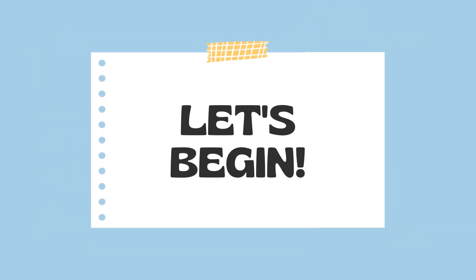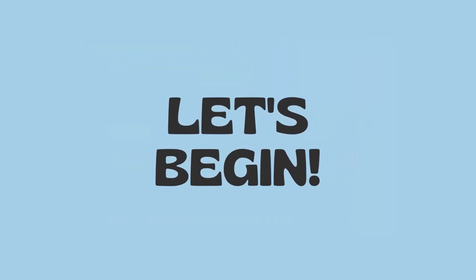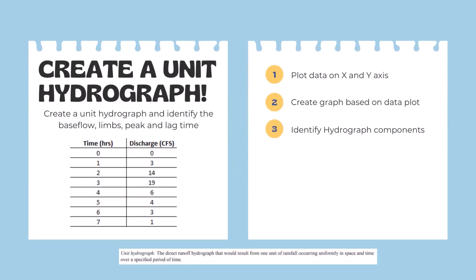Let's actually plot a few hydrographs here. In the first problem, we need to create a unit hydrograph and identify the base flow, limbs, peaks, and lag time. What is our process? We have a table showing time in hours versus discharge. We're going to plot the data on x and y axes, create a graph based on the plotted data, and then identify these components.